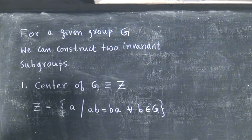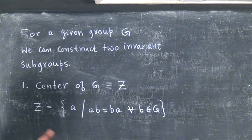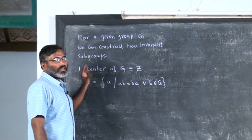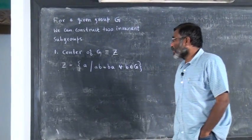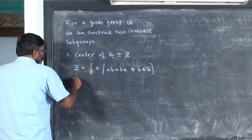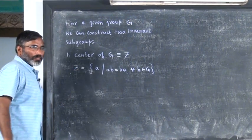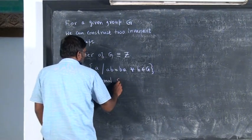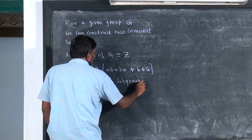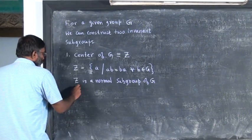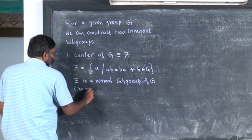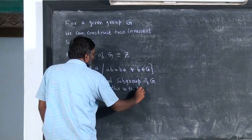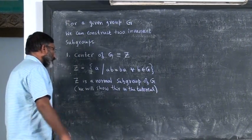That means all those elements which commute with all the elements of the group. Immediately you can realize that identity is one such element, so Z contains at least the identity — identity will commute with all elements in the group. Pick out all those elements that commute with all elements of the group and that set is called the center. Now, this Z is a normal subgroup of G, and we will show this in the tutorial.